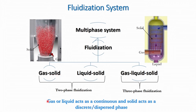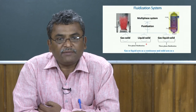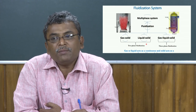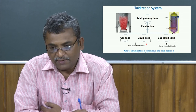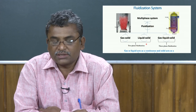In the case of gas-solid or gas-liquid-solid systems, the gas or liquid acts as a continuous medium and the solid acts as a discrete or dispersed phase medium. In two-phase systems, gas is the continuous phase and solid is the discrete phase. Whereas in three-phase systems, both gas and solid may be dispersed phases and liquid may be the continuous phase, or gas will be the continuous phase and liquid and solid will be discrete phases.